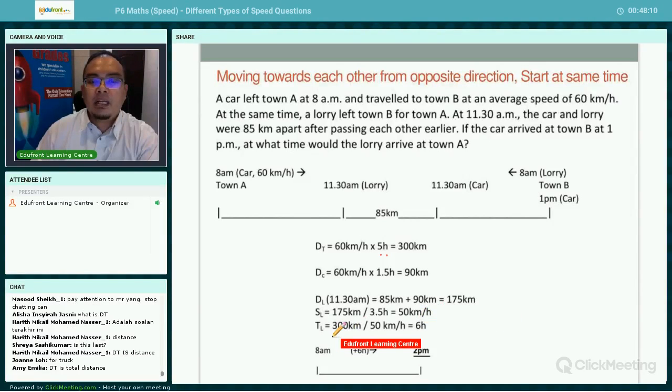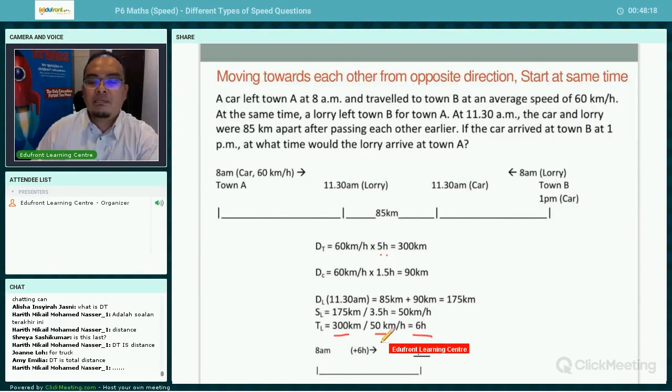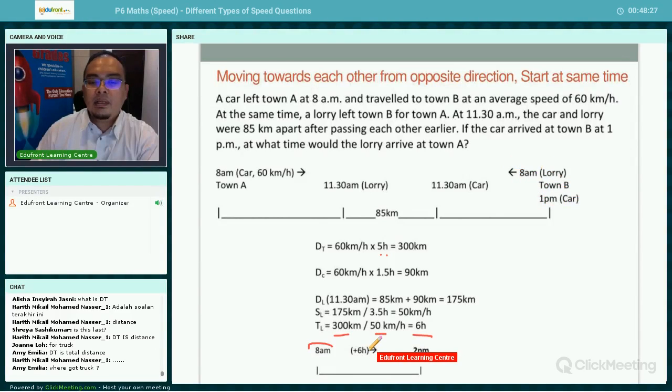So the time taken by the lorry will be distance divided by speed, 300 kilometers divide by 50, you get 6 hours. So the question asked, at what time did the lorry arrive at town A? The lorry left at 8 a.m., so 6 hours later will be 8 a.m. plus 6 hours, you get 2 p.m.